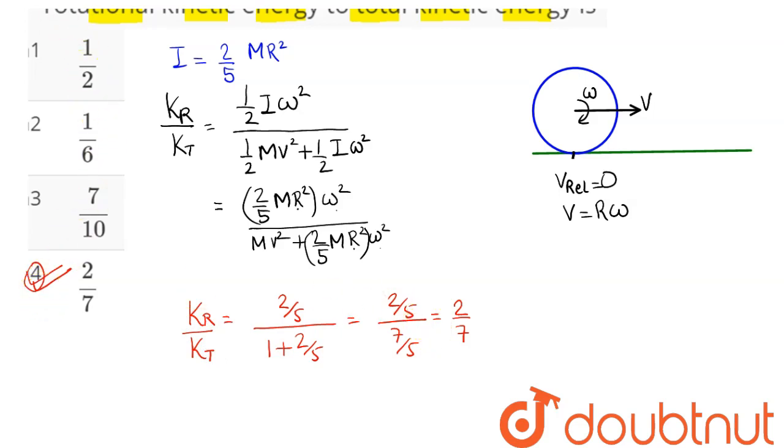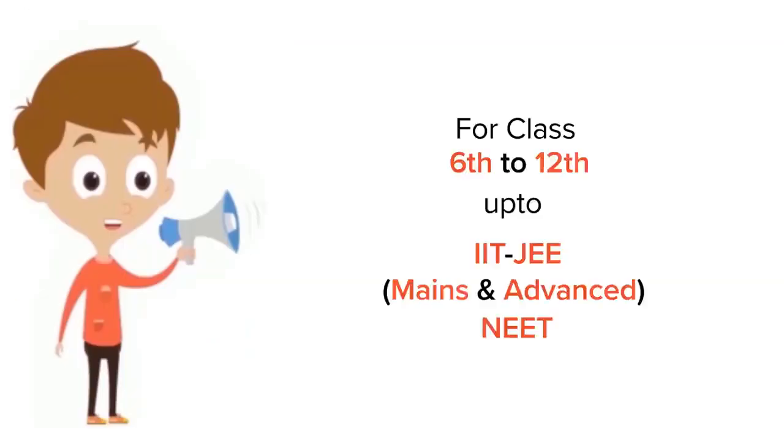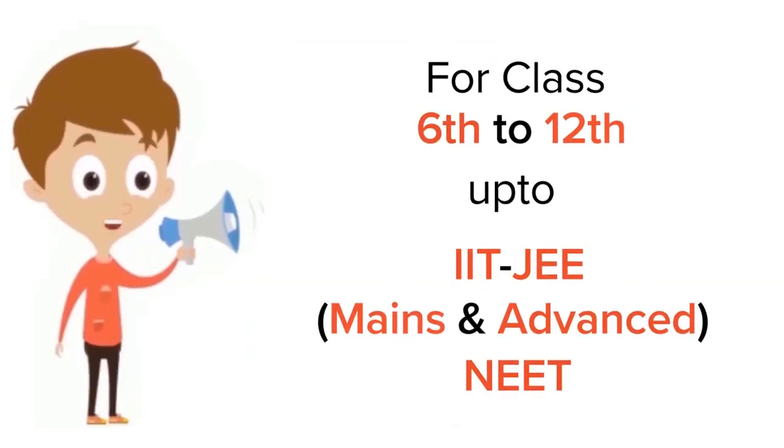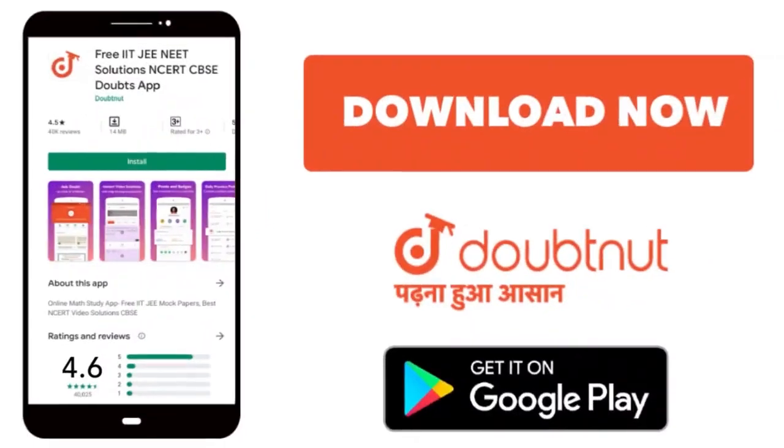Hence option number 4 is the correct answer. So 4 is our answer for class 6 to 12, IIT, and NEET level, trusted by more than 5 crore students. Download Doubtnet app today.